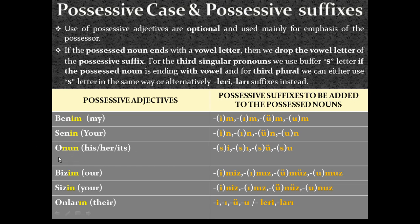For the third person singular possessive adjectives, the situation is different. Why? Because normally the possessive suffixes are single vowels: ı, i, u, ü. So, if the possessed noun ends with a vowel, since I cannot drop these single vowels, I have to add an extra buffer 's' letter, making them: sı, si, su, su — for possessed nouns ending with a vowel. But if the possessed noun is ending with a consonant, I don't need the extra 's' buffer, just using: ı, i, u, ü.